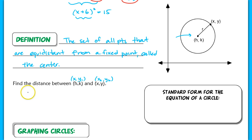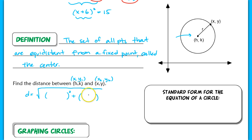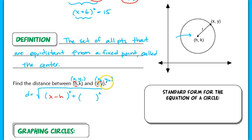The distance is going to be the square root of the difference between the x values squared, plus the difference between the y values squared. Using correct notation: the square root of (x minus h) squared plus (y minus k) squared. This is the distance between h, k and x, y.